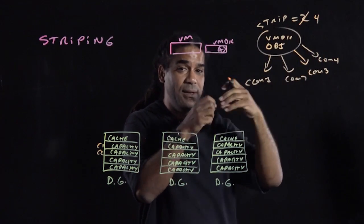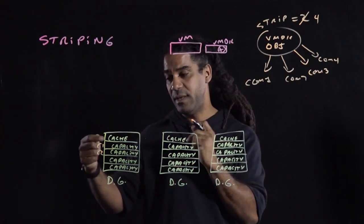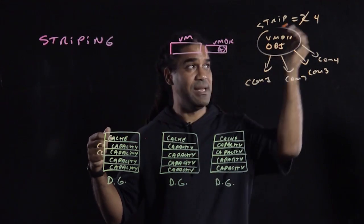vSAN would take the VMDK, break it into four pieces. So now you have four new components. The component 1 and 2 are now going to be different from these two original components when you had a stripe of 2.